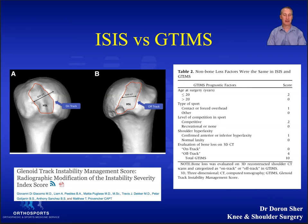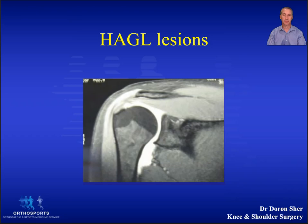Neither the ISIS score nor the GTIMS score takes into account HAGL lesions. A humeral avulsion of the glenohumeral ligament typically happens with hyperabduction and external rotation of the arm. The incidence is 5 to 10% and is more common in young female athletes.